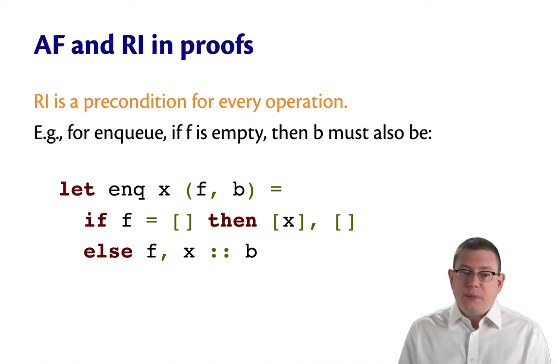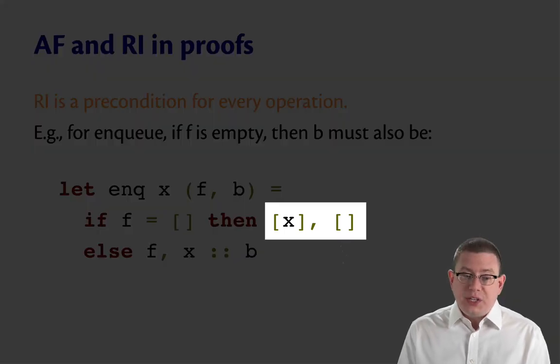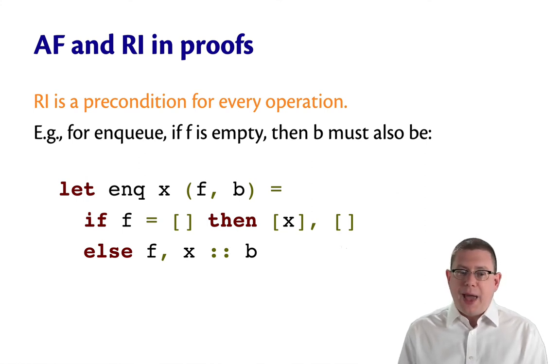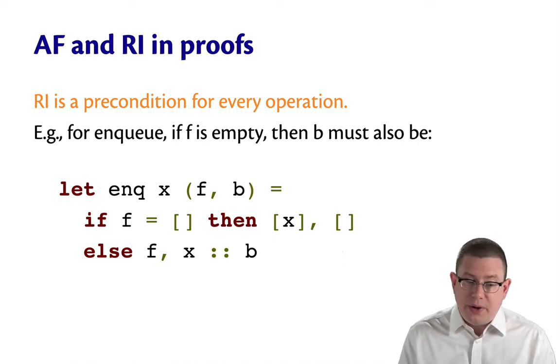In this implementation of enqueue, if f is empty, then b must also be. And that's essential to being able to prove that this implementation of enqueue is correct. Because if the back weren't empty in the then branch, then we'd be losing elements from the queue. There'd be some elements in b. We're throwing those away when we return an empty backlist in the then branch. So, it's essential that that rep invariant holds.